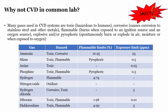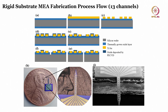Many gases used in CVD systems are toxic, corrosive, flammable, explosive, or pyrophoric — they can spontaneously burn or explode in air, moisture, or when exposed to oxygen. In terms of gas hazards, flammable limits, and exposure limits, gases such as ammonia, silane, arsine, phosphine, hydrogen, nitrogen oxide, hydrogen chloride, diborane, and dichlorosilane all have significant hazards as listed in the table.